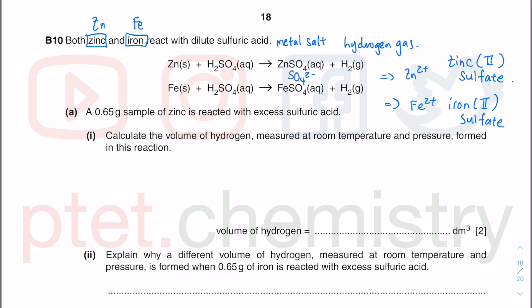Now we have a calculation. We have a 0.65 gram sample of zinc reacting with excess sulfuric acid — we don't use the one in excess. We need the volume of hydrogen gas. We have to relate reacting mass using mole = mass/AR for an element, versus mole of gas = volume of gas / molar volume. As stated at the bottom of your periodic table, one mole of any gas occupies 24 dm³. The answer is required in dm³, so volume divided by 24 dm³ per mole.